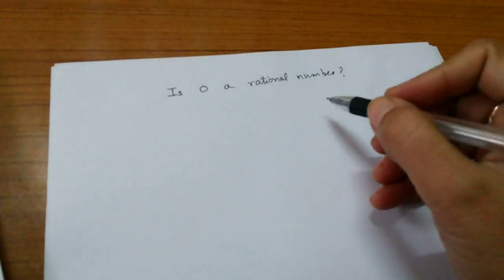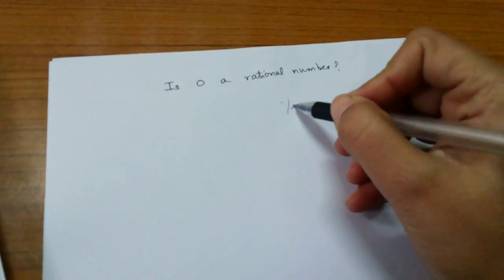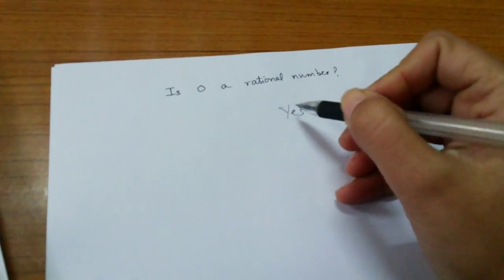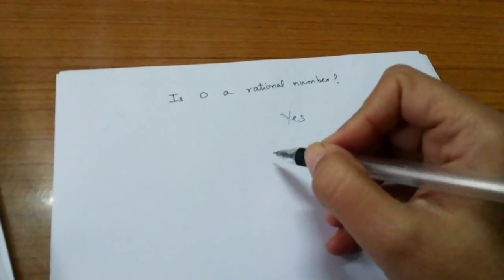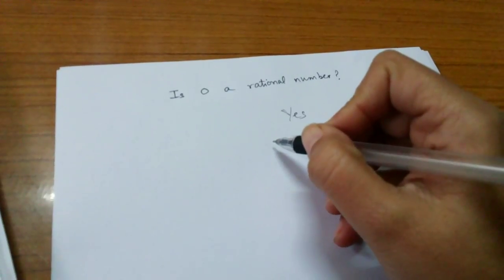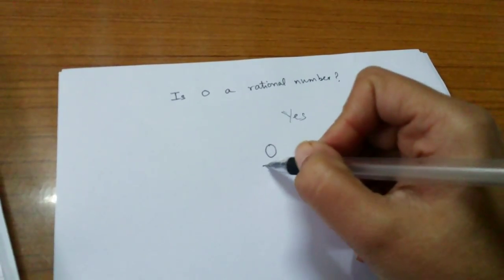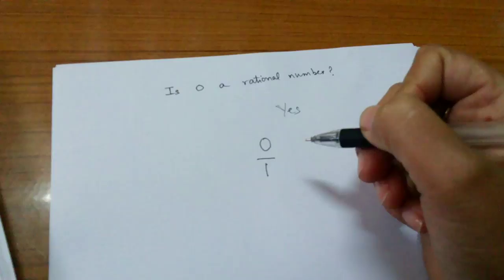Is 0 a rational number? Yes. 0 is a rational number as 0 can be expressed as 0 divided by 1.